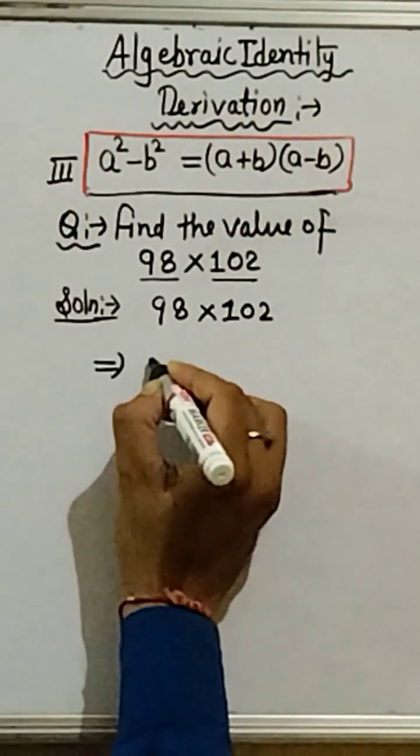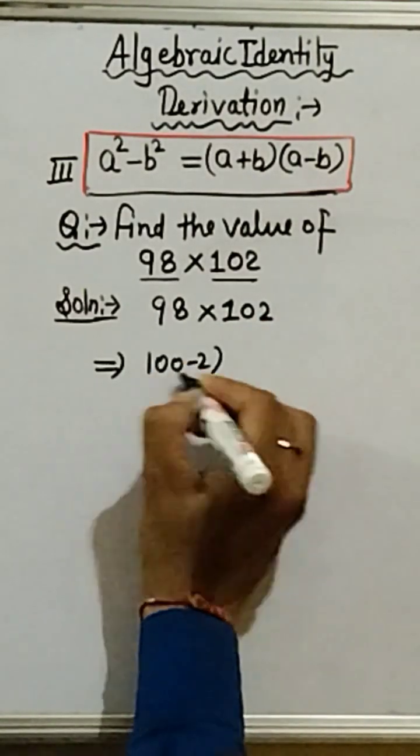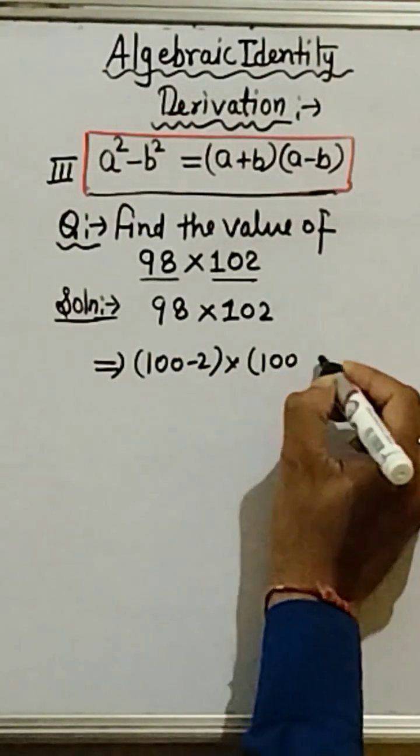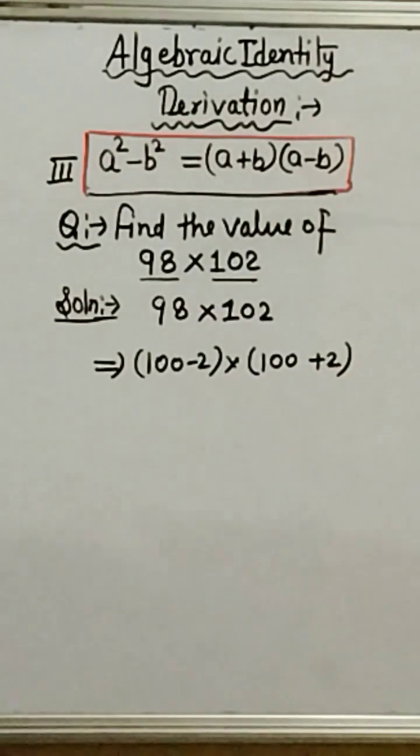98 can be written as 100 minus 2, okay. And 102 can be written as 100 plus 2, okay.